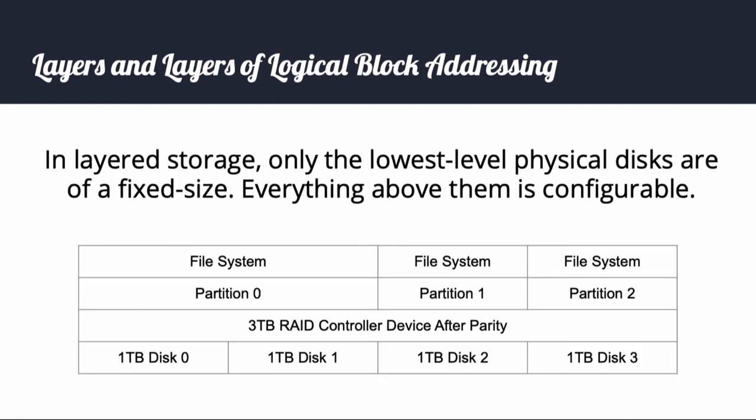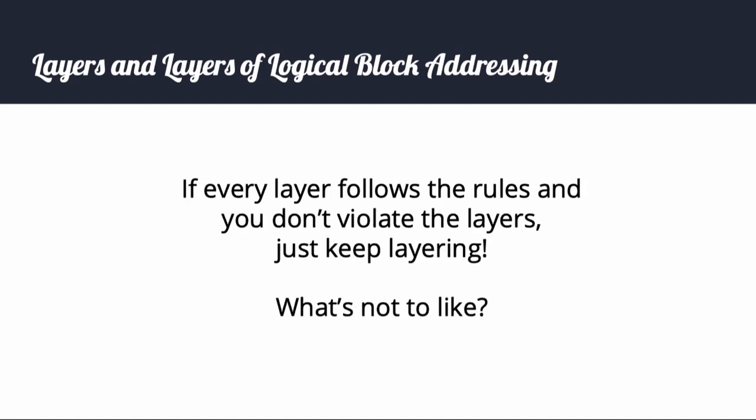In layered storage, only the lowest-level physical disks are of a fixed size. Everything above them is configurable within the confines of the devices below them. In this simple example, four 1TB disks could be combined by a RAID controller to provide 3TB of user-accessible storage and the ability for one disk to fail without compromising the integrity of the 3TB imaginary block device. The 3TB can in turn be partitioned in a number of ways with additional layers such as encryption.